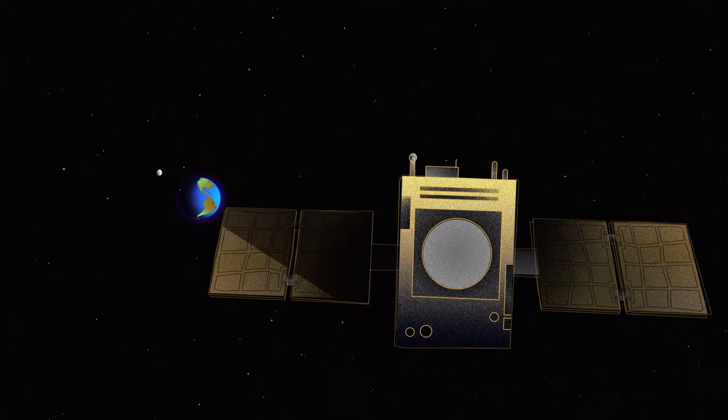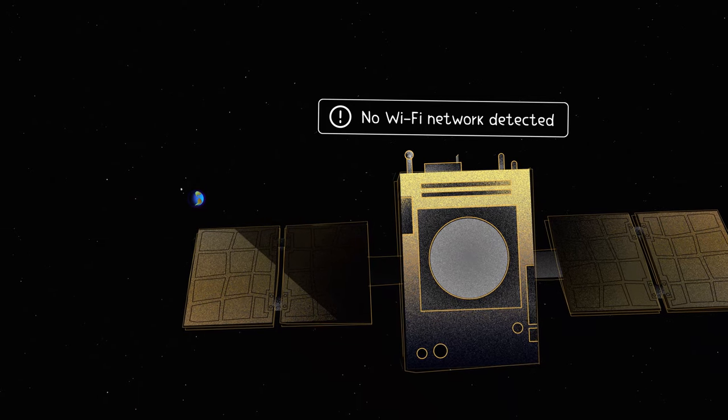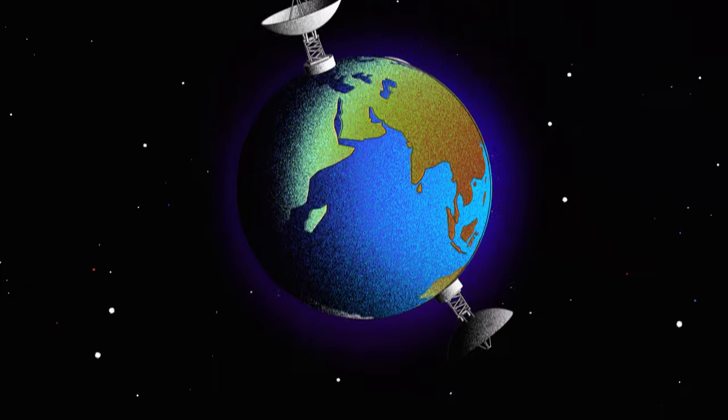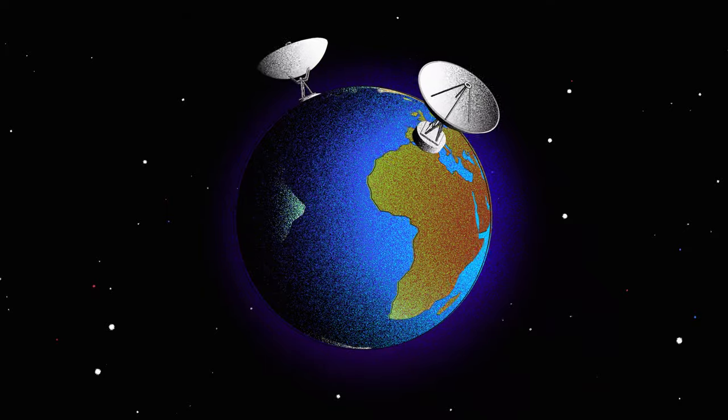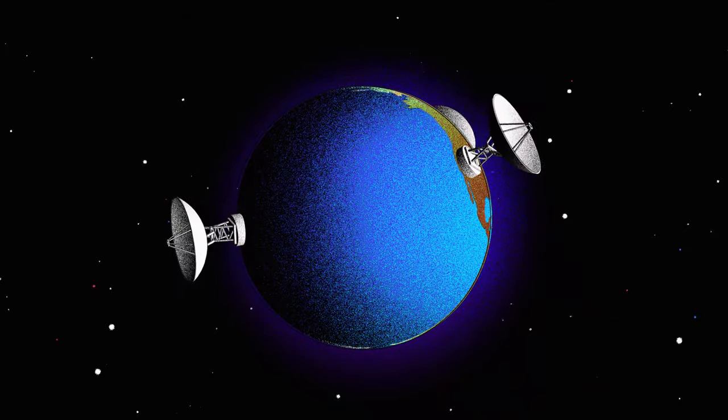How do scientists and engineers communicate with far away robotic spacecraft exploring our solar system? When scientists and engineers want to send commands to a spacecraft, they turn to the Deep Space Network, NASA's international array of giant radio antennas used to communicate with spacecraft at the moon and beyond.